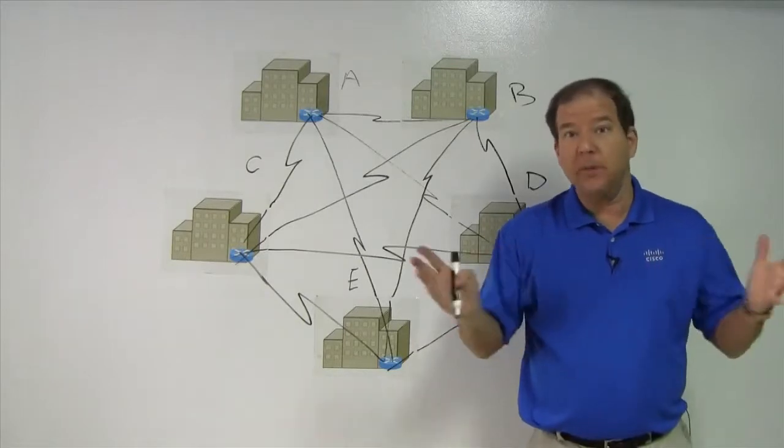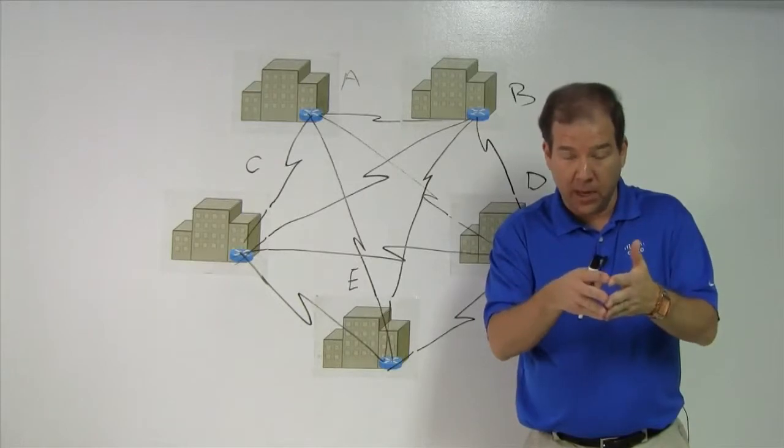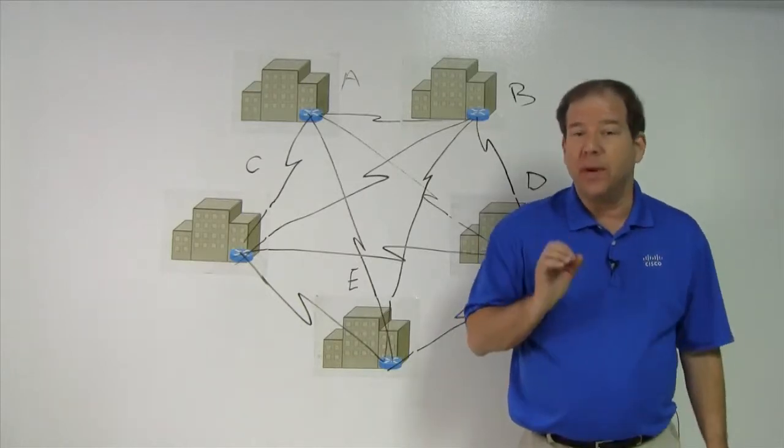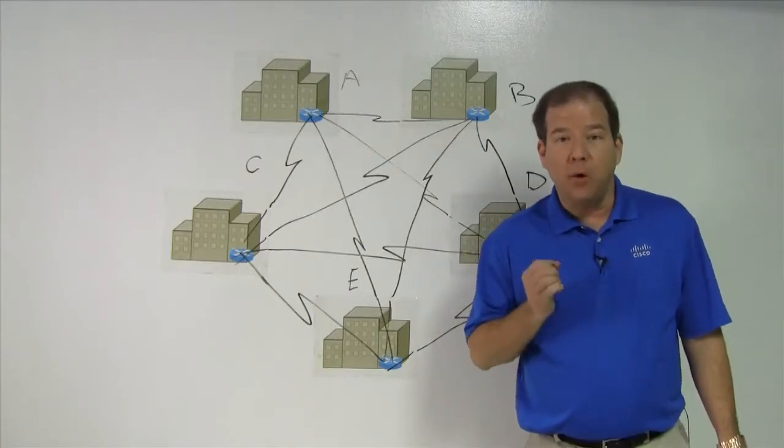This is the opposite of the hub and spoke topology, where everybody had to come back to a central hub location. Here, I've got a direct path between any two sites. This gives me optimal pathing.